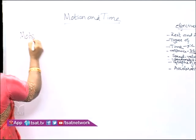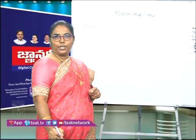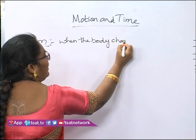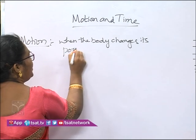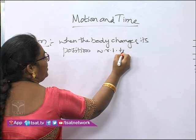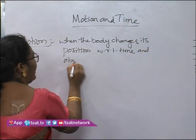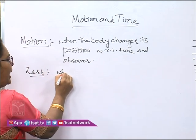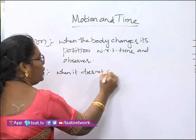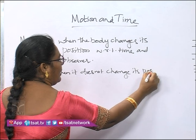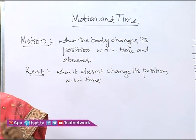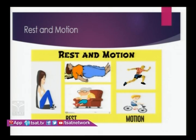When do you say a body is in motion? When the body changes its position with respect to time and observer. When is the body at rest? The body is at rest when it does not change its position with respect to time. So, a body is in motion if it changes its position with respect to time, and it is at rest when it does not.